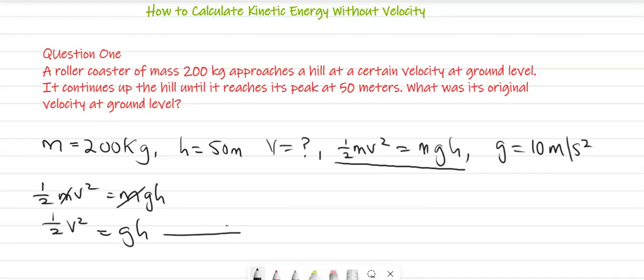When we substitute the values of G and H from this into the equation, we would have something like half V squared. Remember that we are looking for V. This is equal to G, which is 10, times height, which is 50.